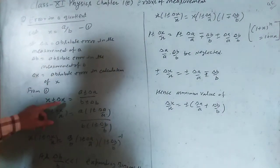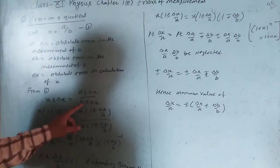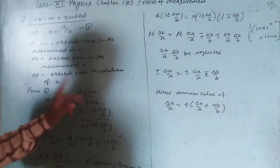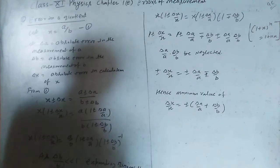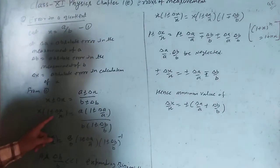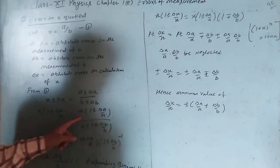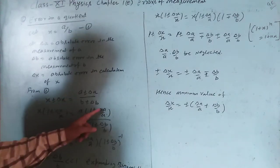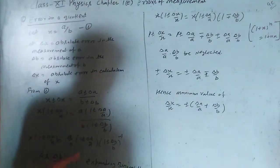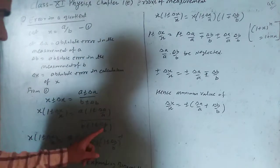x plus minus delta x equals (a plus minus delta a) upon (b plus minus delta b). Taking x common: 1 plus minus delta x upon x. Taking a common in the numerator: 1 plus minus delta a upon a. Taking b common in the denominator: 1 plus minus delta b upon b.